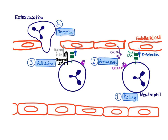And then finally, the neutrophil can migrate through the endothelial cells and get into the tissue. The first interaction is a very loose interaction, which facilitates this rolling. It's always going to be an interaction between E-selectin on the endothelial cell — E for endothelial — and a mucin CAM.